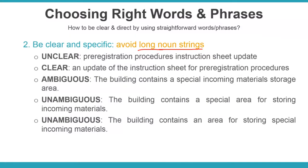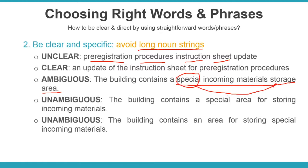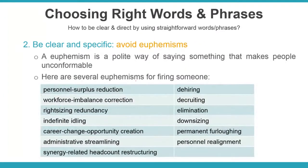Avoid long noun strings — stacking noun after noun. Example: 'pre-registration procedures instructions sheet update' is unclear. Better: 'an update of the instruction sheet for pre-registration procedures.' Another example: 'The building finds a special incoming material storage area' — what is special, the area or the material? Rewrite clearly: 'The building contains a special area for storing incoming materials' or 'a special area for storing incoming special materials.' Be as unambiguous as possible.